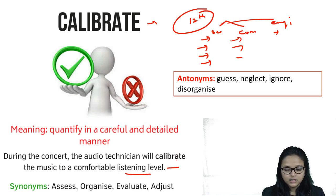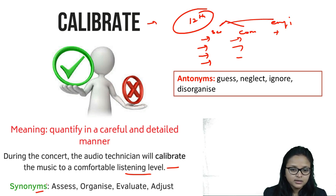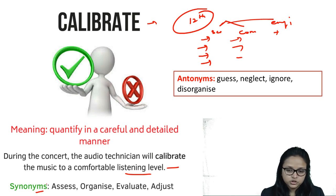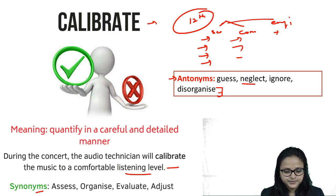He will think about the best level of music so that everything reaches a comfortable listening level. Synonyms for 'calibrate': assess, organize, evaluate, adjust. Antonyms: guess, neglect, ignore, disorganize — when you don't pay attention and just choose without analysis. Calibrate is a verb.